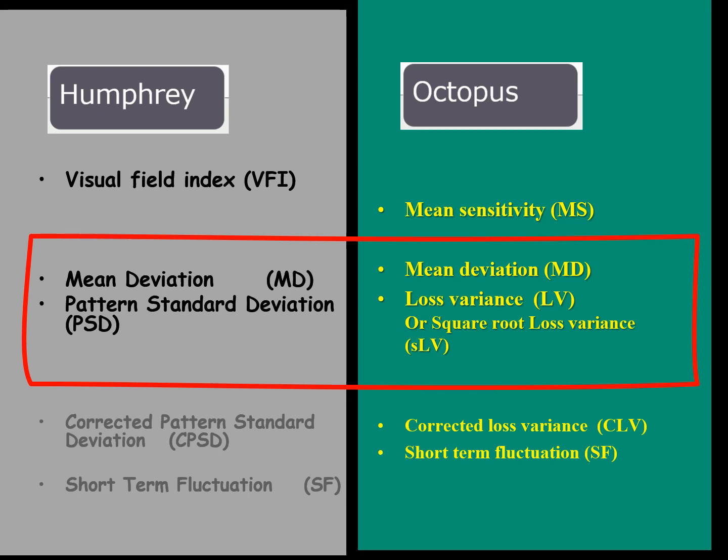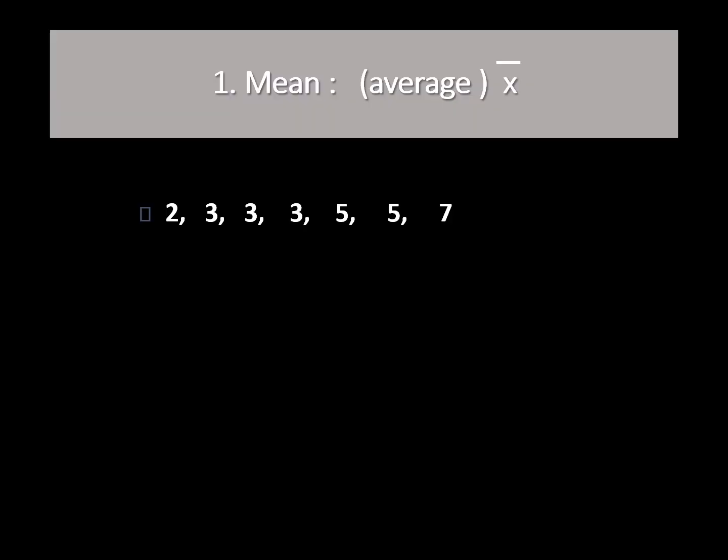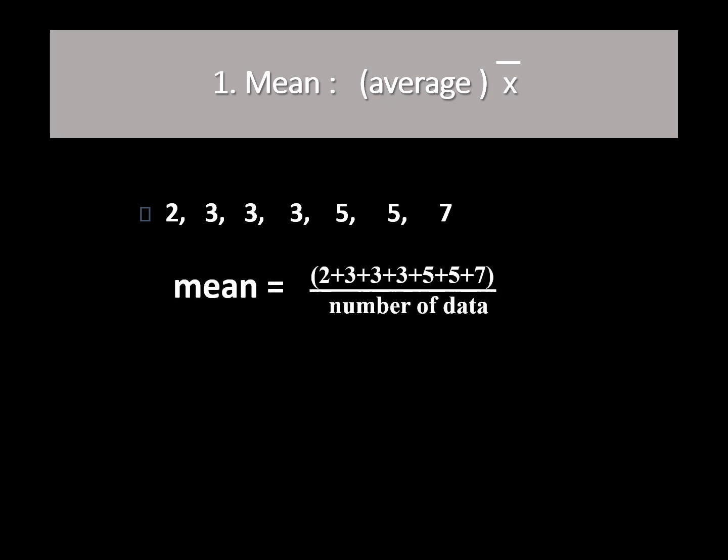All these are very simple to understand. The mean or average: if we have some values, we add them and divide by the total number. A mean is a value aimed at representing the whole group.